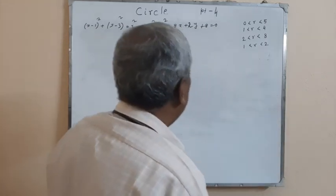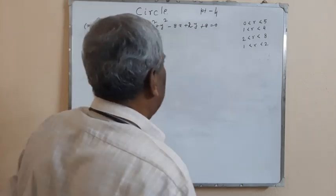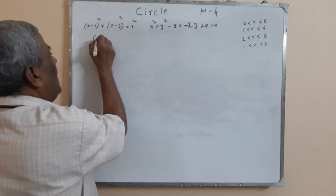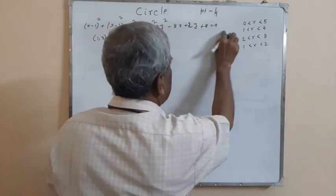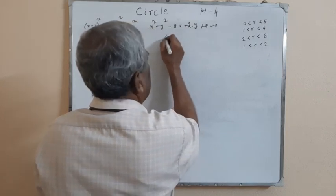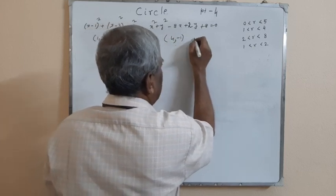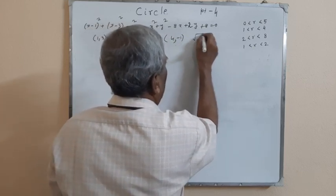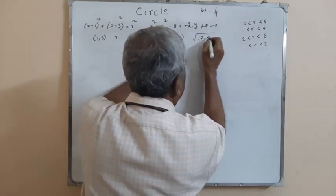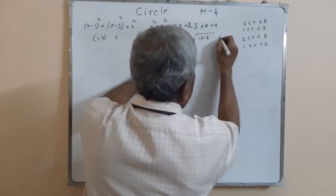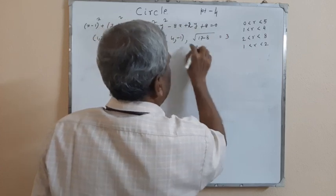Let us see what the problems are. The first is a circle with center at (1, 3) and radius r. The second circle has center at (4, -1) and radius equal to the square root of 16 plus 1 plus 17 minus 8, which equals the square root of 9, that is 3.